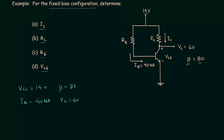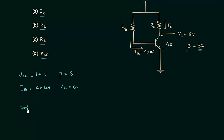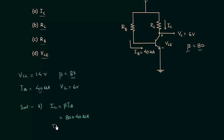For part A, I will calculate the output current Ic. We know Ic equals beta times Ib. Beta is 80 and Ib is 40 microamps, so 80 multiplied by 40 microamps gives us the collector current. Solving this gives 3.2 milliamps as the value of output current Ic.